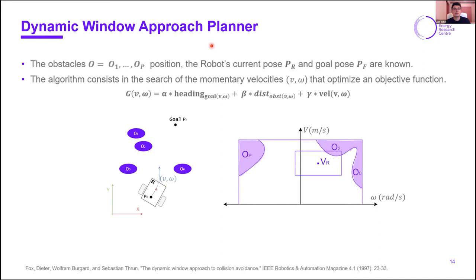For this, the Dynamic Window Approach planner is used. This is a very simple, commonly used algorithm for planning. It basically consists in searching momentary velocities, longitudinal and angular velocity, that optimize an objective function. In this case, this objective function is defined by this equation where we have a term for the heading such that the robot heads as much towards the goal as possible. We have a term for the distance towards the nearest obstacle because we want the robot to be as far from obstacles as possible. And we have a term related to velocity because we want the robot to converge to the goal pose as fast as possible.